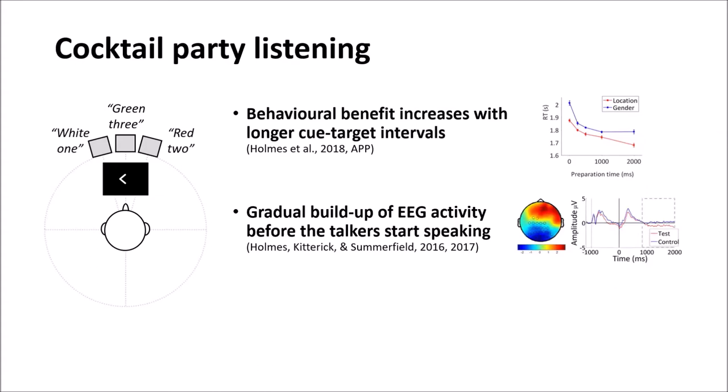Also, EEG activity gradually increases in amplitude before the target talker starts speaking as shown by the red line on this plot. And these effects which are on the order of a second or longer appear to be distinct from faster changes in attention that have been previously associated with theta oscillations which may be related to the sampling of stimuli.